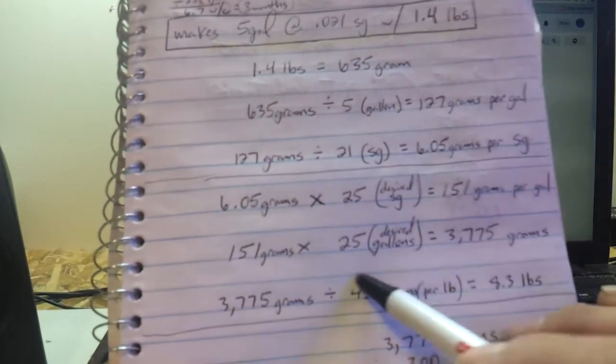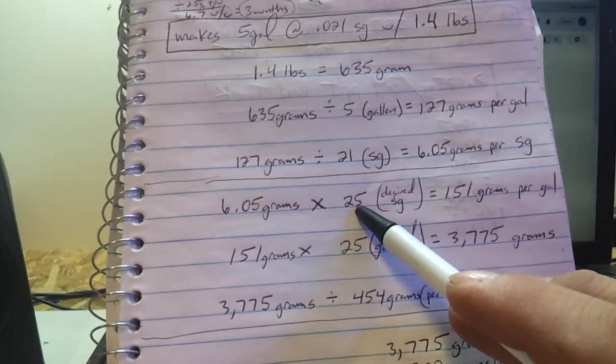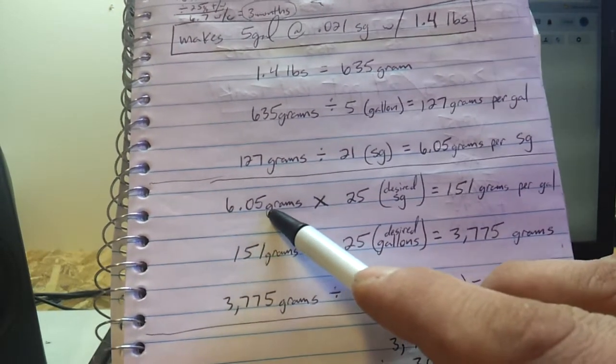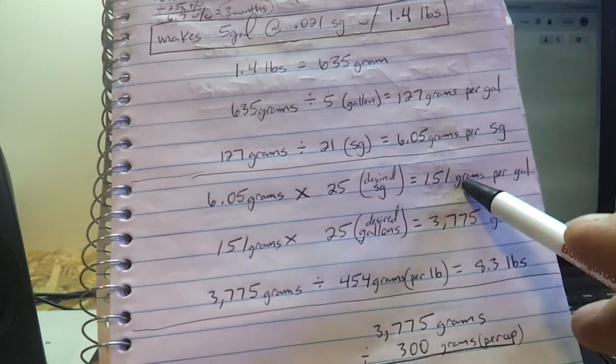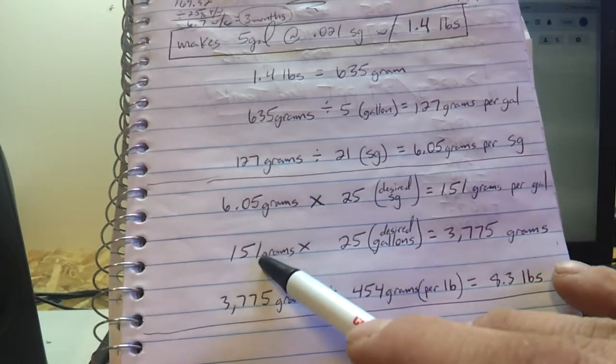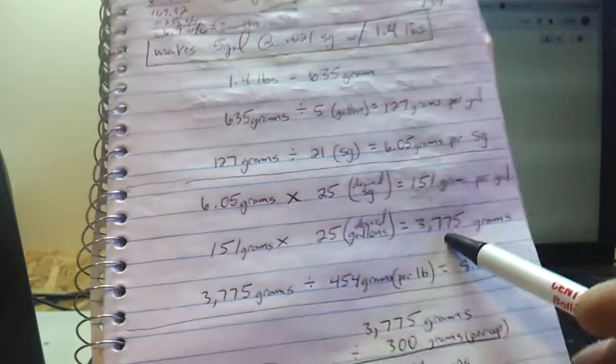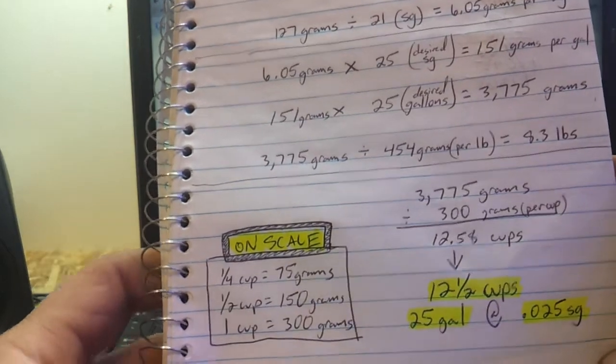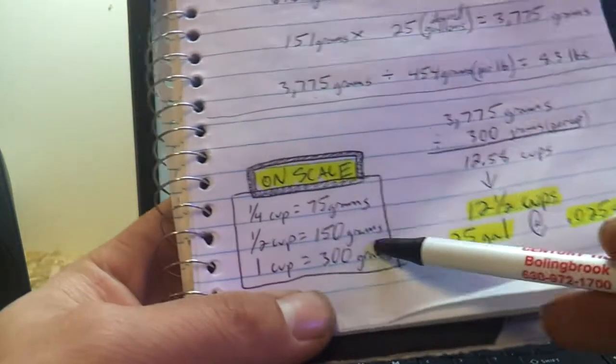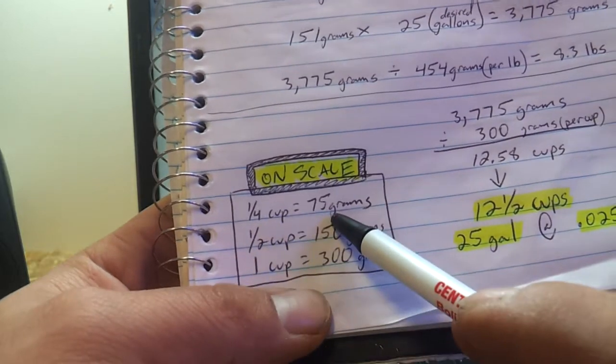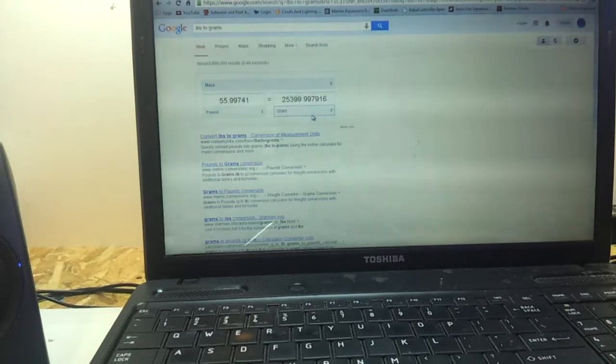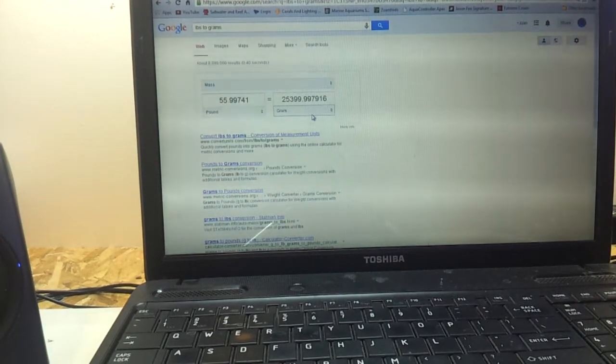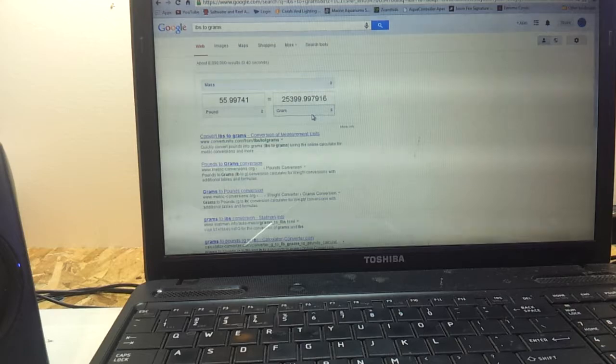So basically say you want to make a salinity of 23. You take the 6.05 times 23. You get your number in grams. And then you take the number in grams and multiply by how many gallons you want to make. And then you do the conversion to figure out how many cups it's going to be. But the Instant Ocean Reef Crystals, this is how much it weighs in a quarter cup: 75 grams. So I hope you enjoyed that. I know it was a little confusing, a little bit of a mess but I figured I'd give you guys something to help you out.